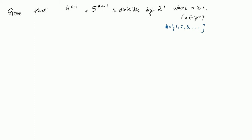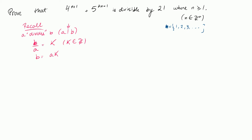Just a quick recall on divisibility. We say that A divides B — I like to write A bar B, where this bar is just a notation for 'divides.' A divides B when B over A is equal to an integer K, or K belongs to Z. This can also be written as B equals AK. So there are different ways of expressing this, but basically that's what it means for A to divide B.